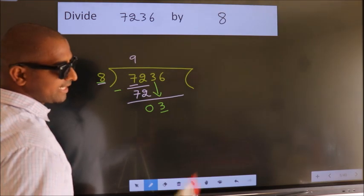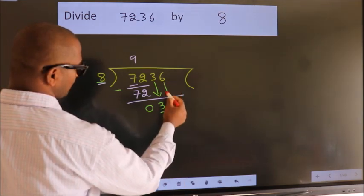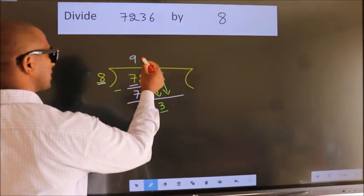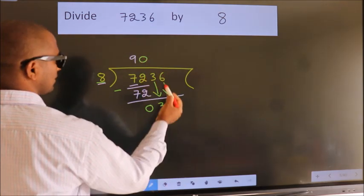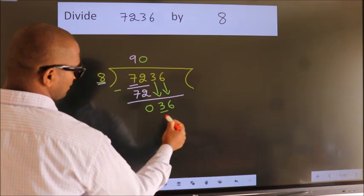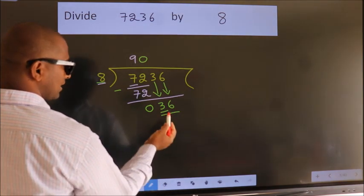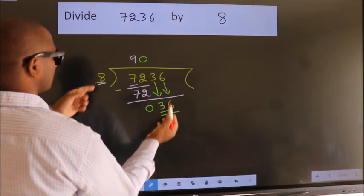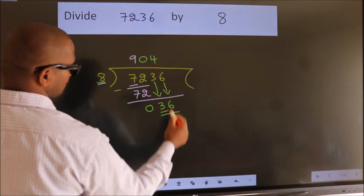So, we should bring down the second number. And the rule to bring down second number is, put 0 here. Then only we can bring down this number. So, 36. A number close to 36 in 8 table is 8 fours 32.